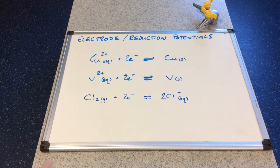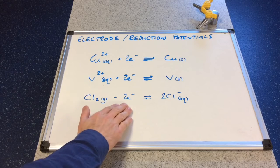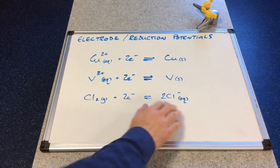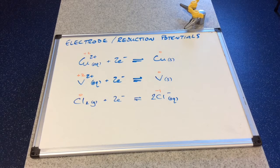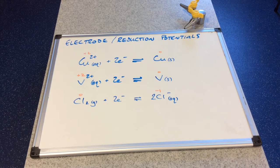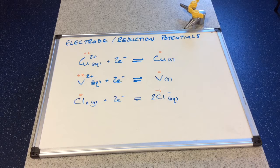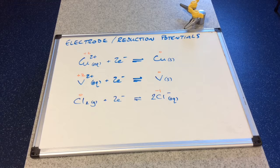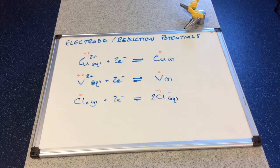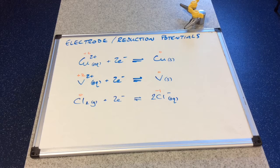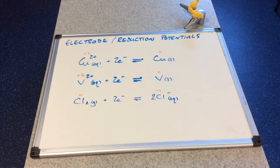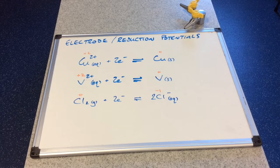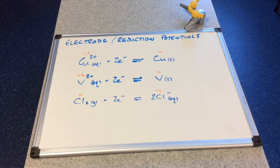So we've got the particle on the left hand side gaining electrons to form the particle on the right hand side. The other important thing to point out is we always have two different oxidation states in the half equation. So in the first one we've got copper in plus two oxidation state in equilibrium with the zero oxidation state. And to change oxidation states we obviously involve electrons.